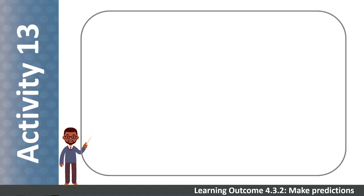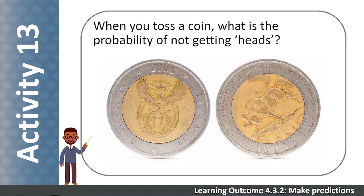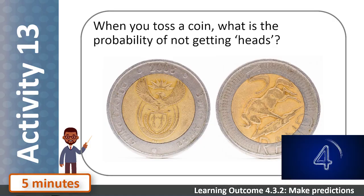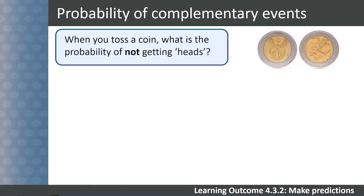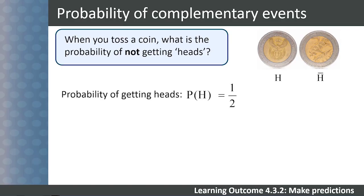Now please try working with the complement yourself. When you toss a coin, what is the probability of not getting heads? Here is the solution: because there are only two possible outcomes, not heads is the complement of heads — they are complementary. The probability of getting heads is one half. The probability of not getting heads is 1 minus one half, which is also one half.